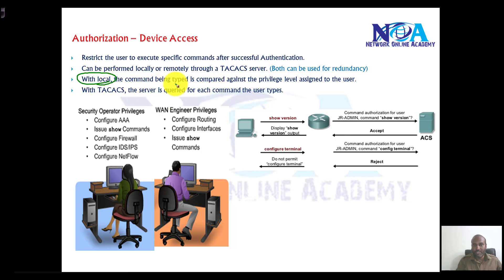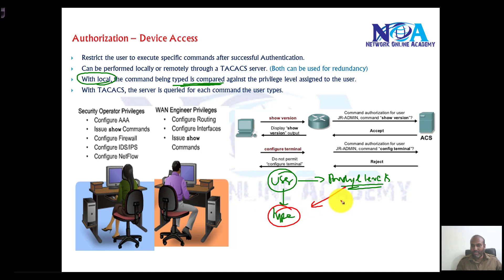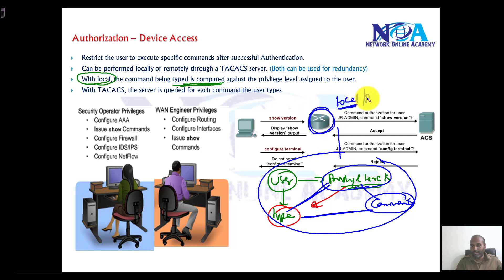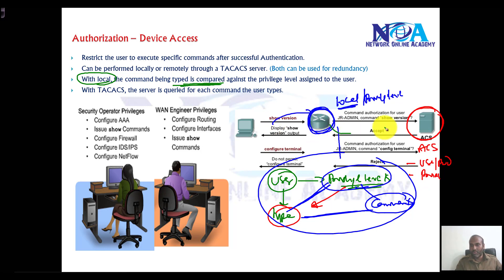Once the user gets authenticated, it is very important to make sure they are also authorized. Just like authentication, we can use a local database or an external ACS server. We'll create users and assign privilege levels. When a user types a command, the router verifies the privilege level and the commands associated with it. We can configure this locally on the router or on external ACS servers, where the router contacts the ACS server to check whether the user can execute that command.